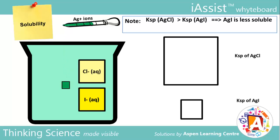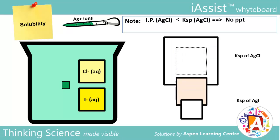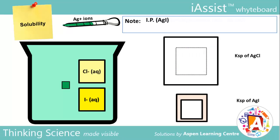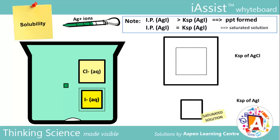When some Ag⁺ is added, the concentration of Ag⁺ in the solution is insufficient to precipitate AgCl since the ionic product (IP) of AgCl is less than its Ksp. However, at these same concentrations, the IP of AgI will exceed the Ksp of AgI. Thus, AgI will precipitate, causing the concentrations of I⁻ and Ag⁺ to drop. Precipitation stops when IP of AgI is once again equal to its Ksp, meaning a saturated solution of AgI is obtained. However, the concentration of Cl⁻ remains constant, since no AgCl is precipitated.